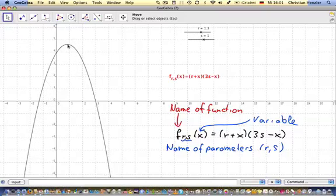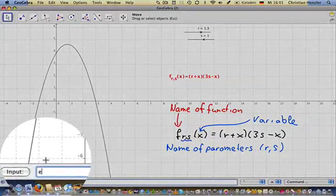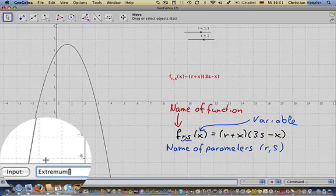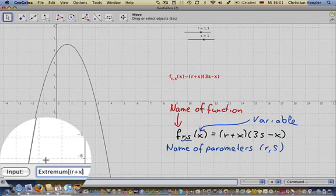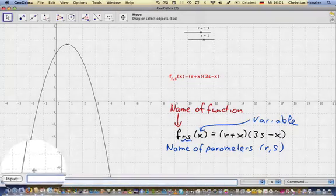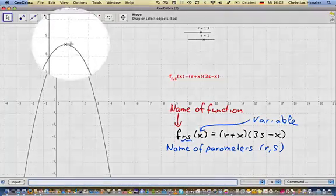And if I want this point, the vertex, to appear in the graph, I can use the command extremum. And in here, in those brackets, I have to put the right side of my equation of my function. Meaning in this case, r plus x times 3s minus x. If I hit the enter button, my vertex appears.